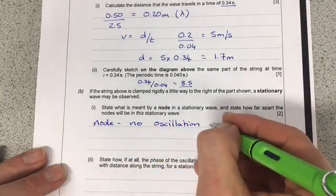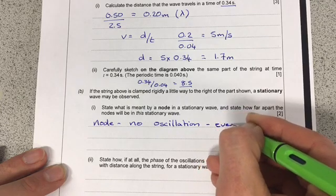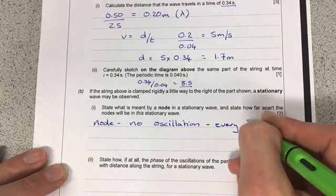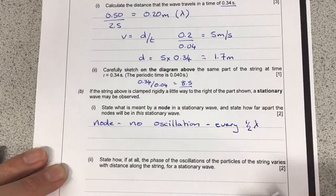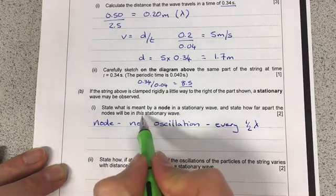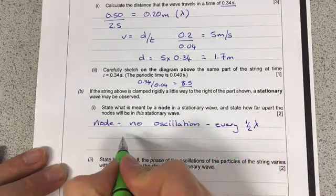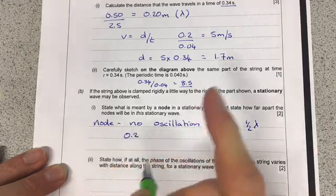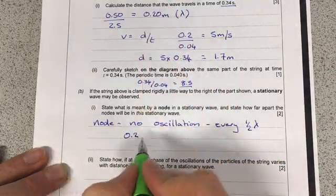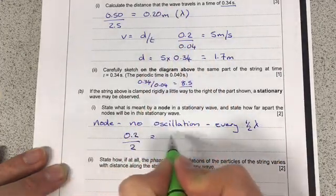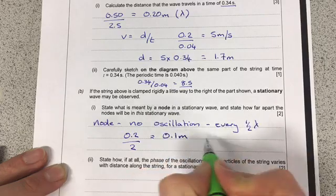Well, we get them every half a wavelength. But on this stationary wave, what is half a wavelength? So, 0.2, that's my wavelength from up here, divided by 2 is equal to 0.1 metres apart.